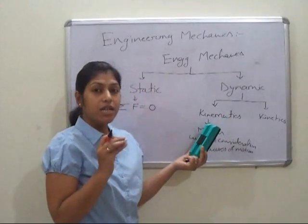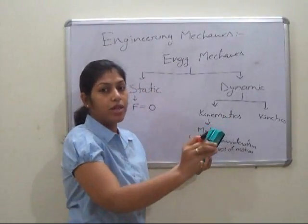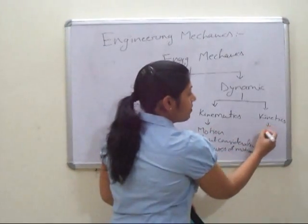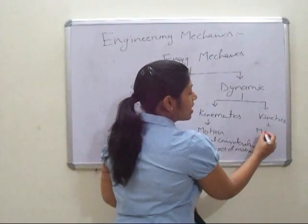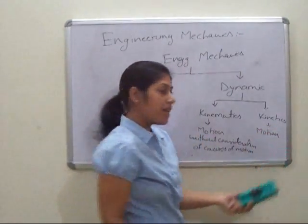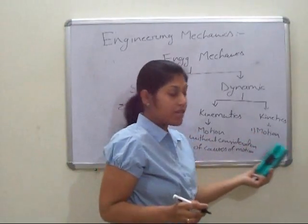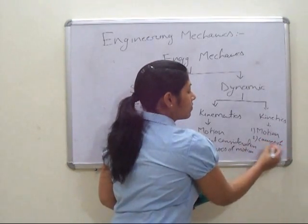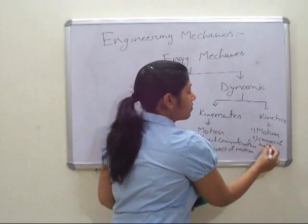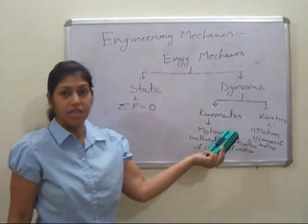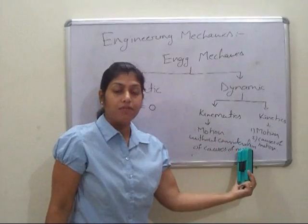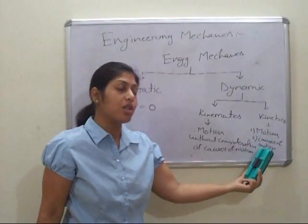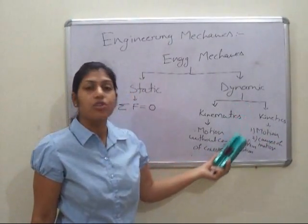Kinematics is when we are considering the motion of the body without consideration of the causes of the motion. And Kinetics is when the body is in motion and we are considering the motion of the body as well as the causes of the motion. So in Kinematics we consider only motion without the causes, and in Kinetics we consider motion as well as the causes of motion. This is the subdivision of Dynamics.